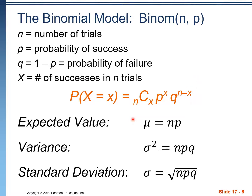The expected value for a binomial model is n times p. The variance is n·p·q, and the standard deviation is the square root of n·p·q.